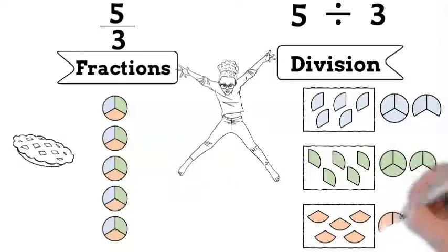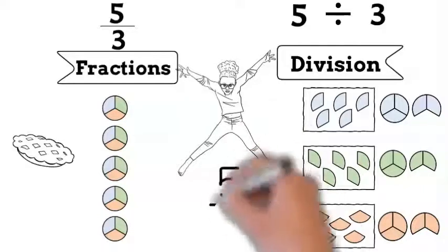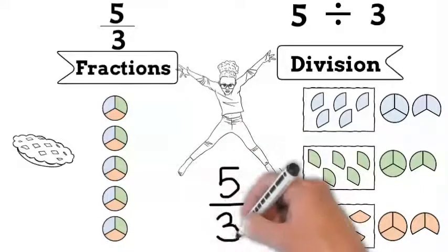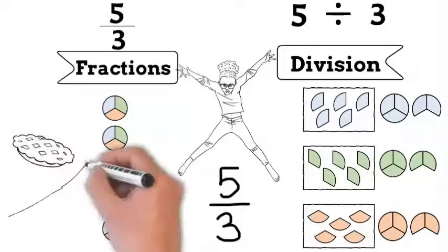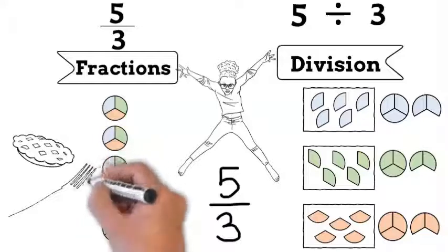And so each person gets 5 times 1 third, which equals 5 thirds of a pie. Is it just me, or do math problems always make you hungry too?